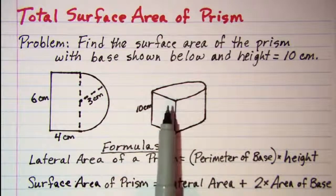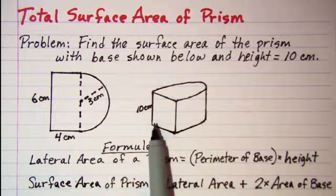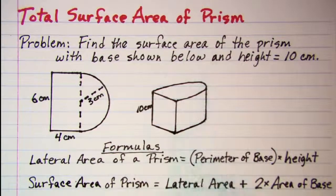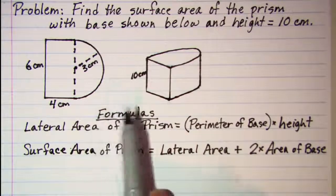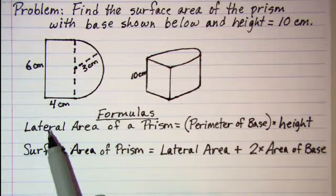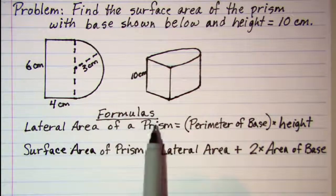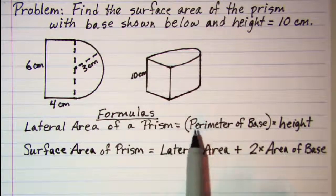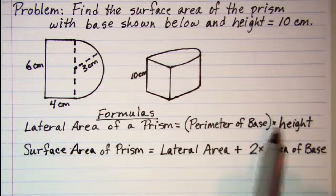This is a sketch of the prism showing the height of 10 cm. The formulas that we will need to use are the lateral area of a prism is equal to the perimeter of the base times the height.